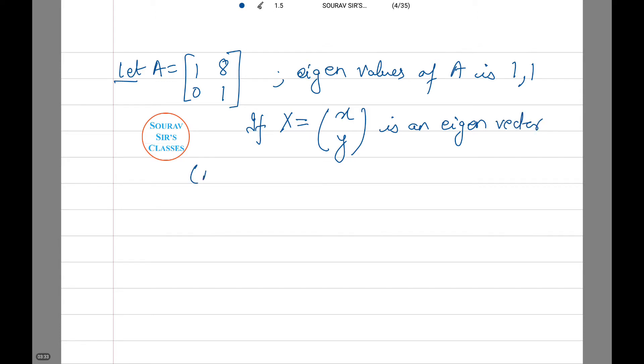Then A minus λI times X equals 0. That is [0, 8; 0, 0] into [x, y] equals [0, 0].